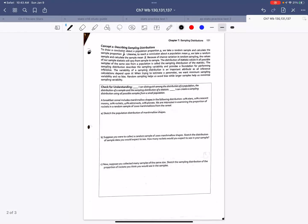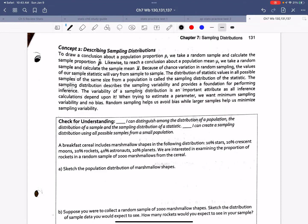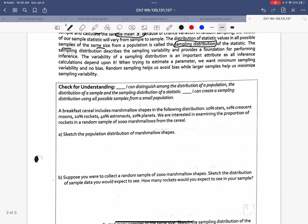So page 131. It says, to draw a conclusion about the population proportion, we take a random sample and calculate the sample proportion. Likewise, to reach a conclusion about the population mean, we take a sample and get a sample mean. This is what we spoke about in class. Because of chance variation, the random sampling, the values of our sample statistic will vary from sample to sample. The distribution of those statistic values in all possible samples from the same size would be called the sampling distribution. The sampling distribution describes the sampling variability provided by the foundation for performing inference. The variability of the sampling distribution is important to attribute as all inference calculations depend on it. While trying to estimate a parameter, we want to minimize or we want the minimum sampling variability and no bias. Random sampling helps us avoid bias while larger samples help us minimize sampling variability.